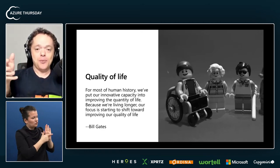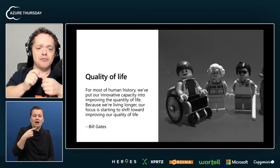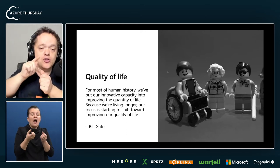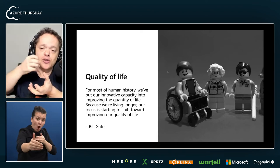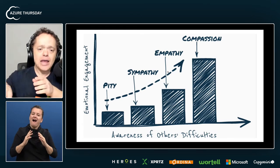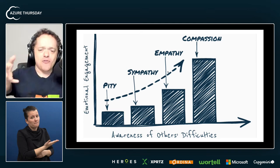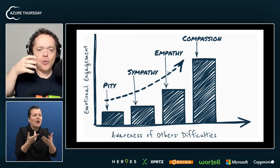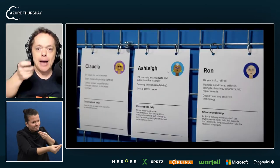But I'm a big believer in the carrot. It's summed up with a quality of life quote by Bill Gates: for most of human history, we put our innovative capacity into improving the quantity of life. Because we're living longer, our focus is starting to shift towards improving the quality of life. We're becoming altruistic. We want to improve people's lives. And I want to take the altruistic approach — to go from pity to sympathy to empathy and to compassion. And you do that by becoming those people — by stepping out of your empathy bubble.